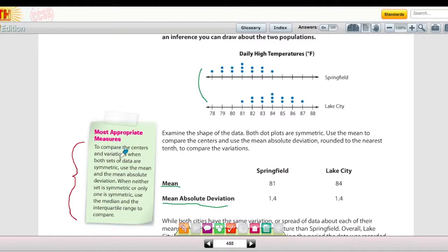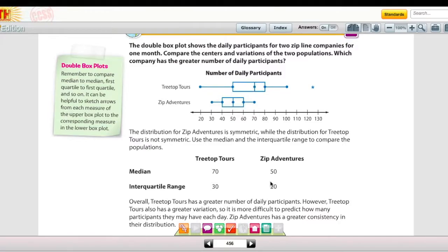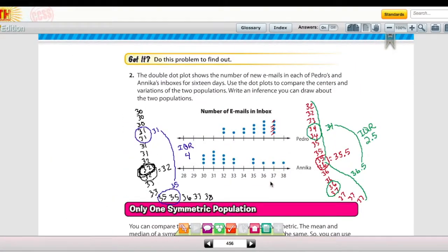When you want to compare the centers and variations, if both sets are symmetric, then use the mean and the mean absolute deviation. When neither set is symmetric or only one is symmetric, use the median and the interquartile range. On this one right here, it's symmetric and it's symmetric, meaning we can draw a line down the center and it's similar on each side. That's why they use the mean and the mean absolute deviation. On the next problem, neither one of them is symmetric, so they were going to be using the interquartile range instead and the median.